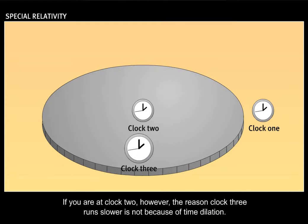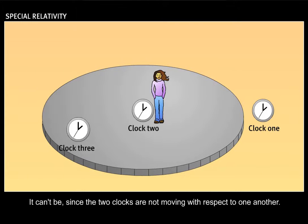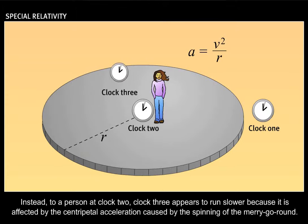If you are at clock two, however, the reason clock three runs slower is not because of time dilation. It can't be, since the two clocks are not moving with respect to one another. Instead, to a person at clock two, clock three appears to run slower because it is affected by the centripetal acceleration caused by the spinning of the merry-go-round.